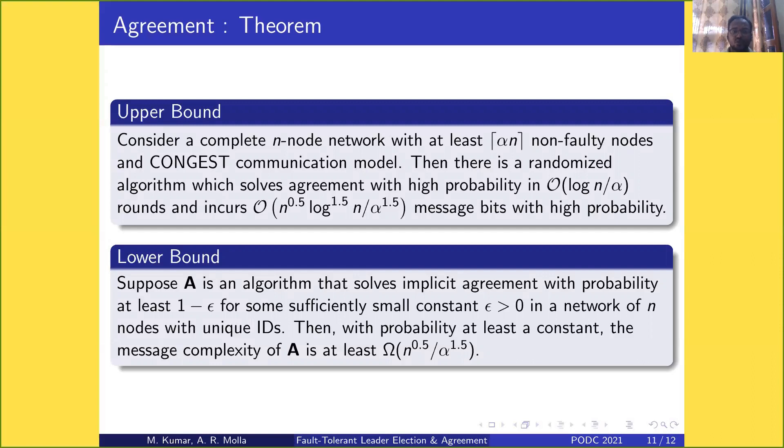For the lower bound: suppose A is an algorithm that solves implicit agreement with probability at least 1-ε for some sufficiently small constant ε > 0. In a network of n nodes with unique IDs, with at least constant probability, the message complexity of A is at least Ω(n^0.5 / α^1.5).